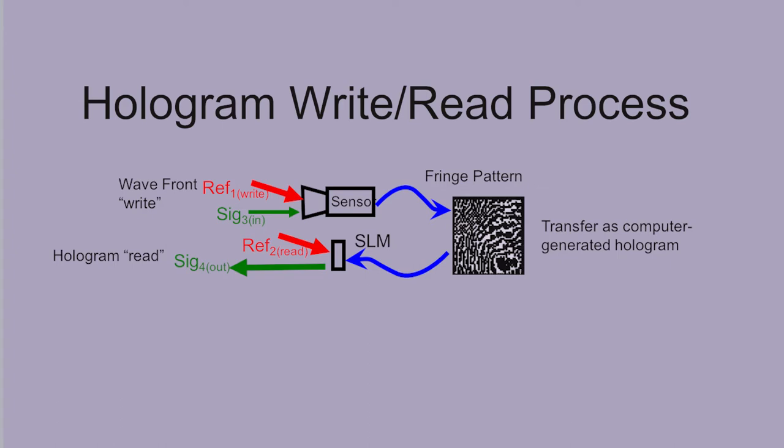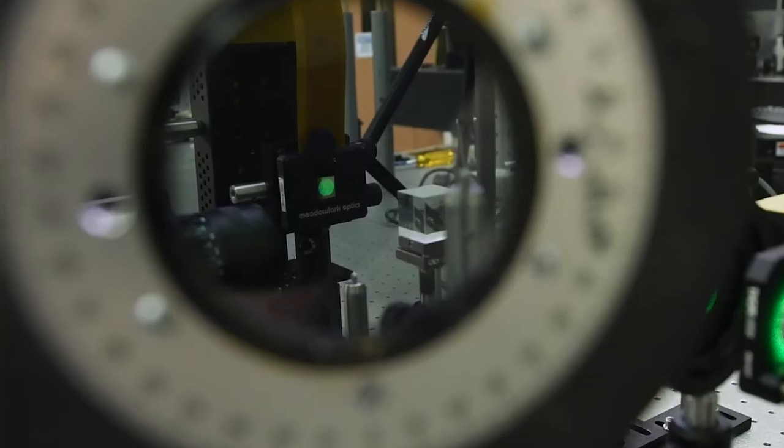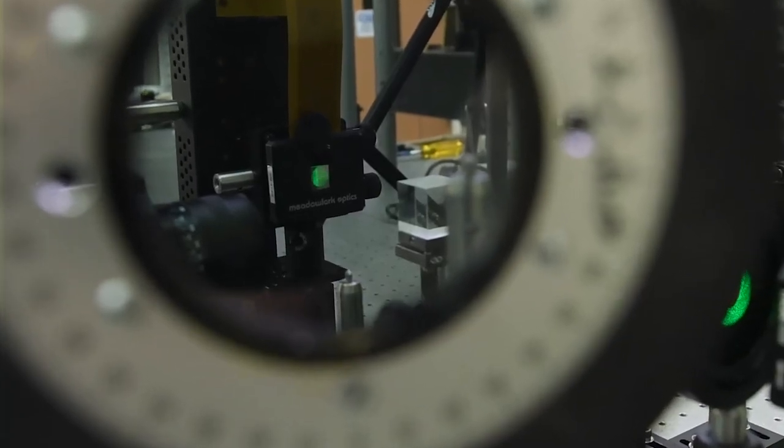That is used to create a hologram of that object, and that hologram is then imprinted on a device called a spatial light modulator—think of an electronic version of a photographic negative. We illuminate the spatial light modulator with a strong laser beam.